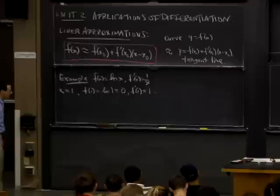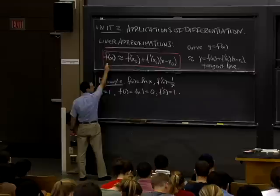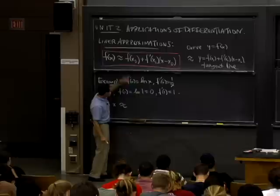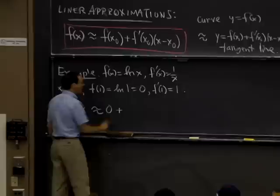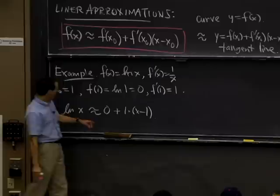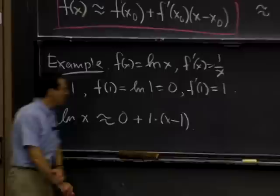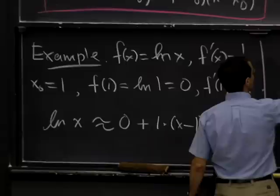Now we have an approximation formula. Copying from our formula, it's going to be: log x ≈ 0 + 1·(x − 1). I plugged in x₀ = 1 in three places and evaluated the coefficients. So all told, the logarithm of x is approximately x − 1.